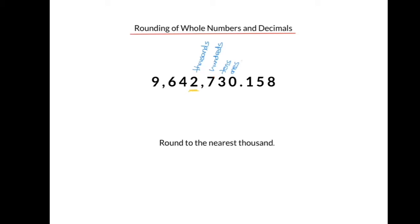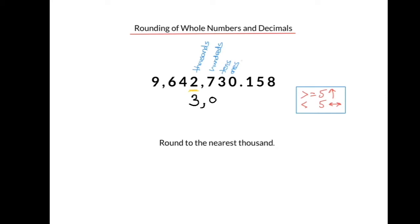Let's apply the rounding rule. You look to the digit immediately to the right of the place value you want to round to. If that number is greater than or equal to 5, you round up. If that number is less than 5, you leave the place value as it is. So we look to the 7 — it is greater than or equal to 5, so we round up the 2, the thousands column, to a 3. Everything to the right goes to 0, and everything to the left stays the same.